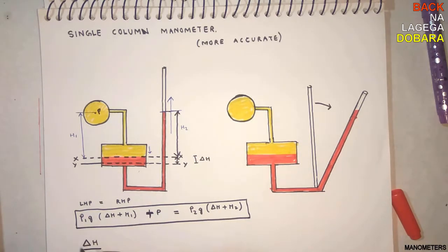Which is equation of cross section: del H into larger area is equal to small area into H2. This will help solve the equation.